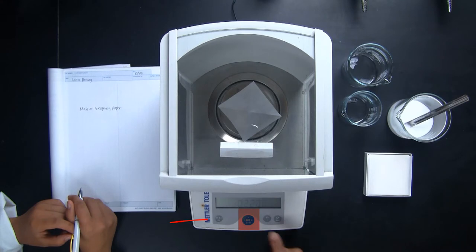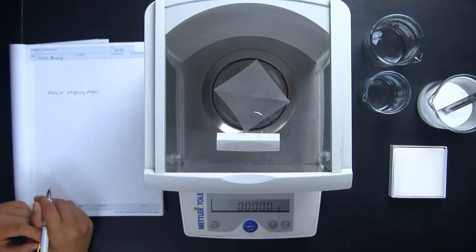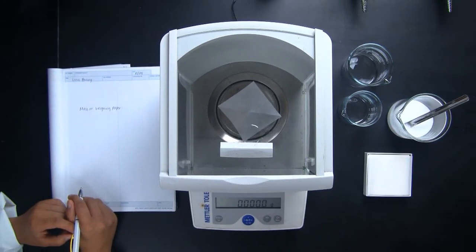Now, when the weighing paper is on the balance pan, Ash hits the zero or the tare button. And this will re-zero the balance with the weighing paper on the pan. Notice how the reading is zero and the weighing paper is on the balance pan. Now anything that is added to the weighing paper will be measured by the balance.